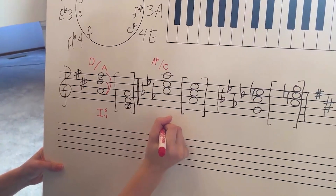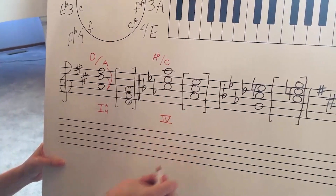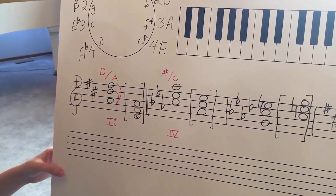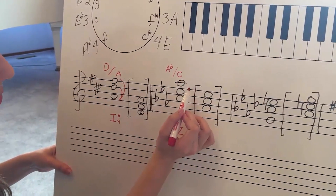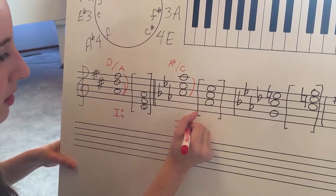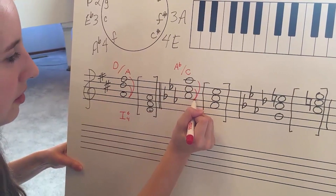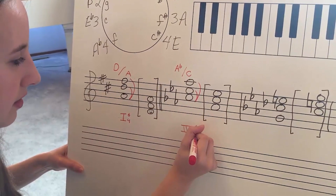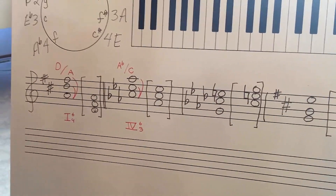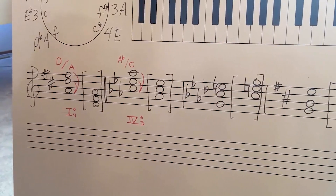Now we're writing the subdominant — what number is that? Four. And it's major, so uppercase or lowercase? Uppercase. Okay, so uppercase four. And then go ahead and finish your functional chord symbol — top note to the root would be? Six. So go ahead and draw that in — six. And then the bottom interval is a third. Okay, so that's your four six-three. Excellent!